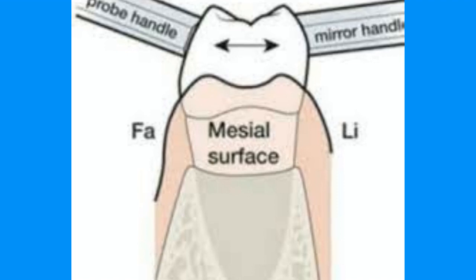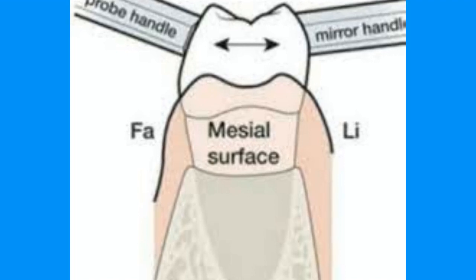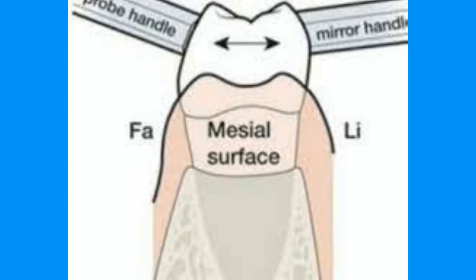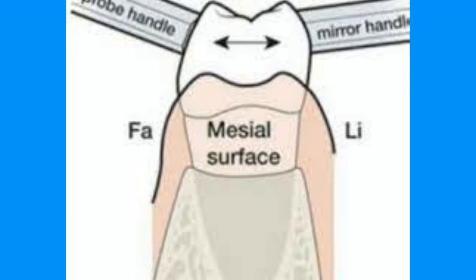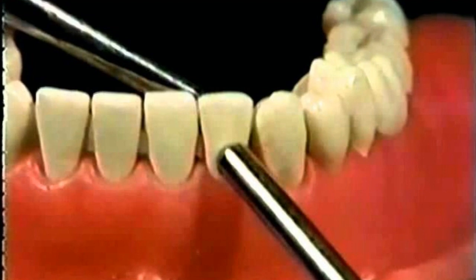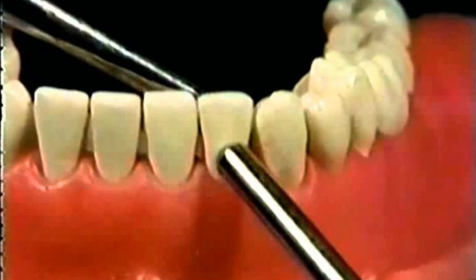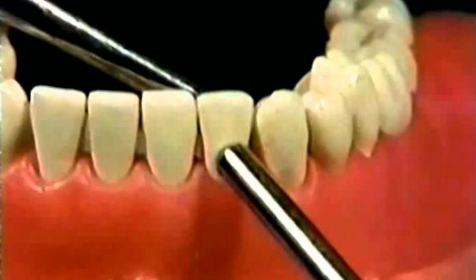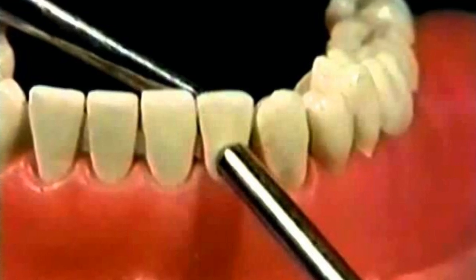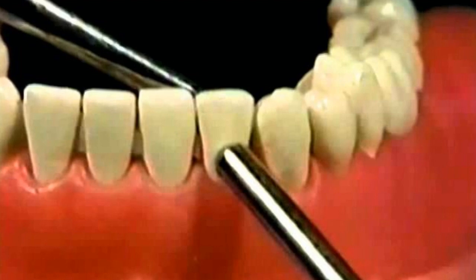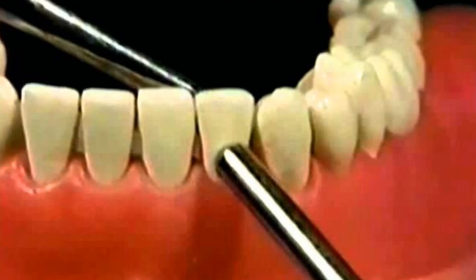You push the tooth either buccolingual or mesiodistal. If it is less than one millimeter, that is Grade 1. If it is one and less than two, that is Grade 2. More than two is Grade 3 mobility. Here is another clear picture showing the correct placement of the instruments, and you will start pushing the teeth either buccolingual or mesiodistal and grade accordingly.